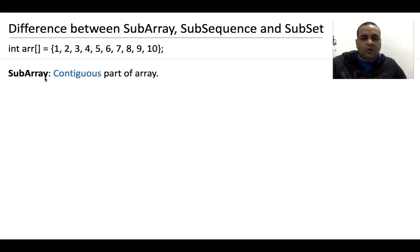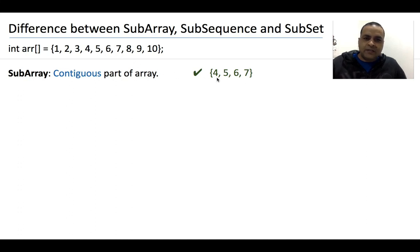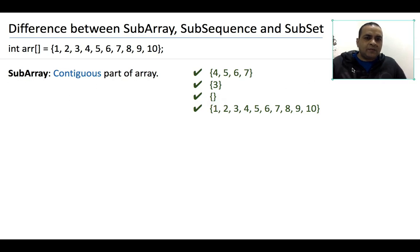An array is said to be a subarray of another array when all the elements appear continuously in the original array. So 4, 5, 6, 7 is a subarray of the original array because all four elements appear as-is in the original array. It's like cutting a chunk of the original array — that becomes the subarray. After 4 we have 5, then 6, then 7, in both the original array and the subarray. Similarly, a single element like 3 is also a subarray, an empty array is also a subarray of all arrays, and the array itself may also be considered a subarray.